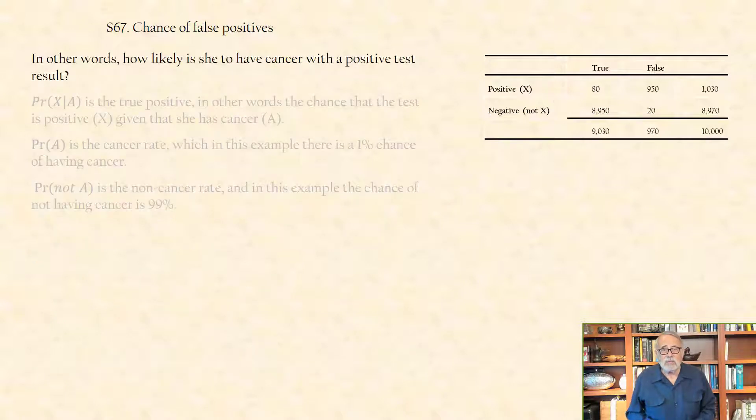In other words, how likely is she to have cancer with a positive test result? Pr(X|A) is the true positive, in other words, the chance that the test is positive X, given that she has cancer A.